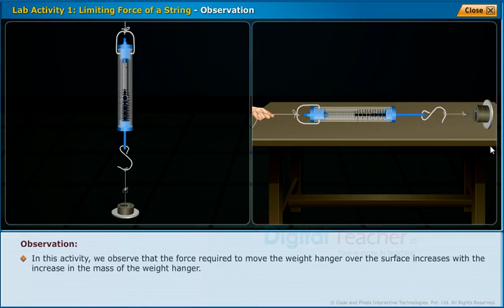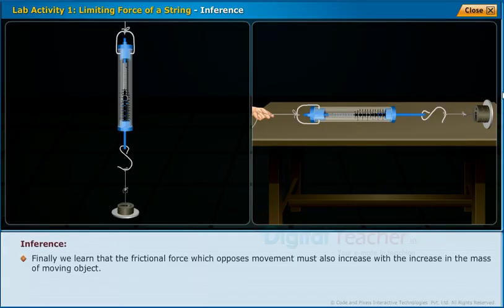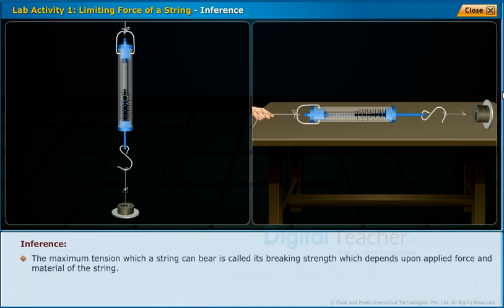In this activity, we observe that the force required to move the weight hanger over the surface increases with the increase in the mass of the weight hanger. We learn that the frictional force which opposes movement must also increase with the increase in the mass of the moving object. The limiting force that a string can bear is the maximum load that we can hang from it without breaking it. The maximum tension a string can bear is called its breaking strength, which depends upon applied force and material of the string.